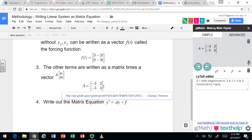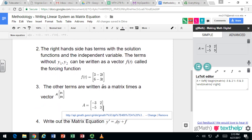So, notice that the matrix A just has the components that are the coefficients of those terms. Negative 3, 2, negative 5, and 3.